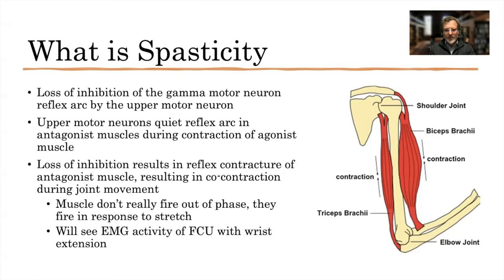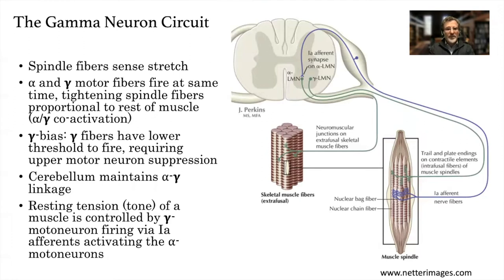On an EMG, for example, you'll see activity of the FCU with wrist extension — we call that the muscle firing out of phase, but it's not really firing on its own volition. To understand spasticity, you need to understand the gamma motor neuron circuit. Spindle fibers within the muscle sense stretch. There are alpha and gamma motor fibers that fire at the same time, tightening the spindle fibers proportional to the rest of the muscle — alpha-gamma coactivation. There is a gamma bias requiring upper motor neuron suppression. The cerebellum maintains the alpha-gamma linkage. Resting tone is controlled by the gamma motor neuron firing via the 1A afferents, activating the alpha motor neurons.